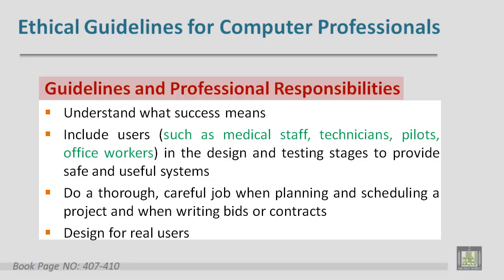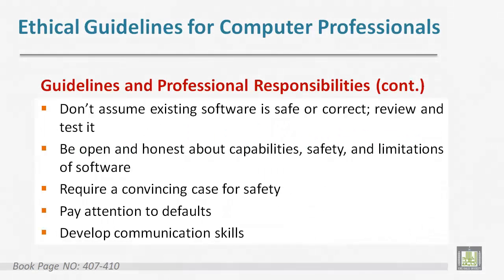Here are guidelines and professional responsibilities. Understand what success means. Include users in the design and testing stages. Do a thorough job when planning and scheduling a project and when writing bids or contracts. Design for real users. Don't assume existing software is safe or correct — review and test it. Be open and honest about the capabilities, safety, and limitations of software. Require a convincing case for safety.